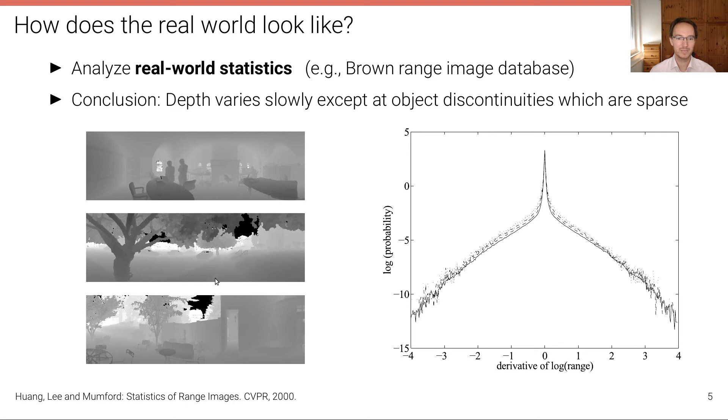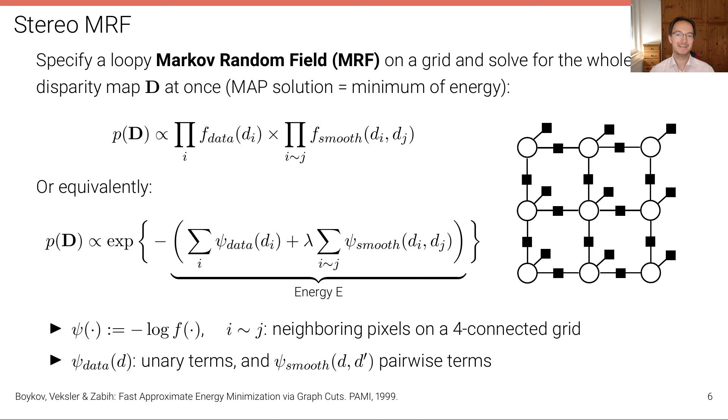So in most areas of the depth map, we have a very smooth transition, very small changes in depth, but then at the object boundaries, we have a large transition, we jump over a large range of disparities. And this reflects in this statistics here, we have a lot of probability mass centered around zero. This is the gradient of the range. But we have also some probability in the tails of this distribution away from zero. Now we want to incorporate such statistics into the model, at least approximately.